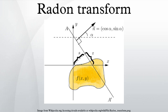In mathematics, the Radon transform in two dimensions, named after the Austrian mathematician Johann Radon, is the integral transform consisting of the integral of a function over straight lines.